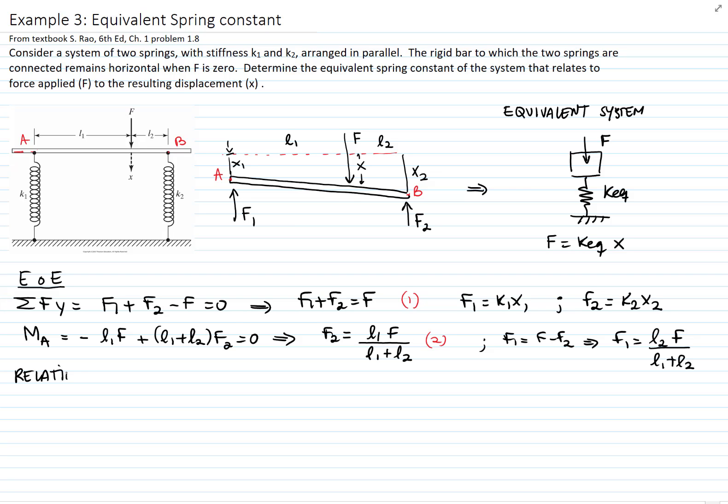Now I will find a displacement relation. How does that tilt and displace at the same time? I will find a relation between X1, X2, and X. By similar triangles, I can say that X2 minus X1 over L1 plus L2 equals X minus X1 over L2.